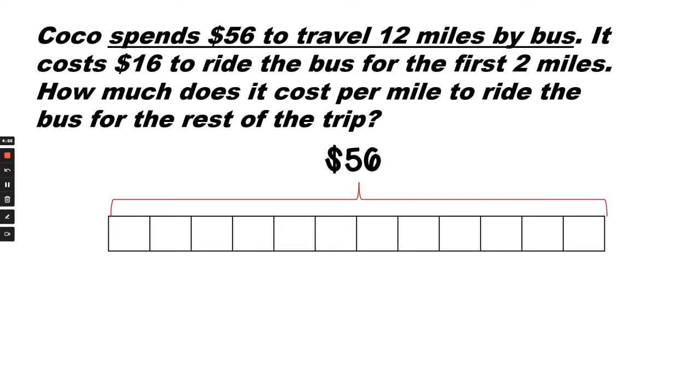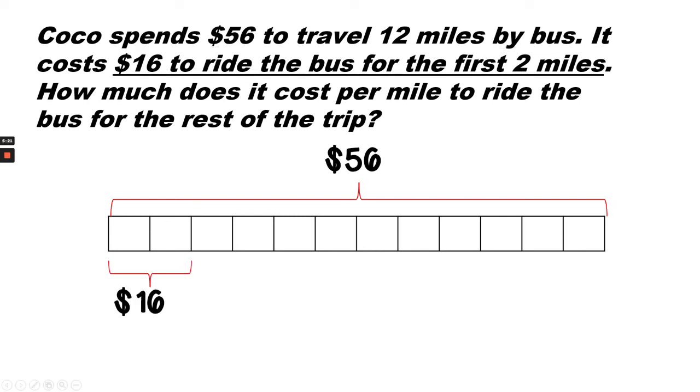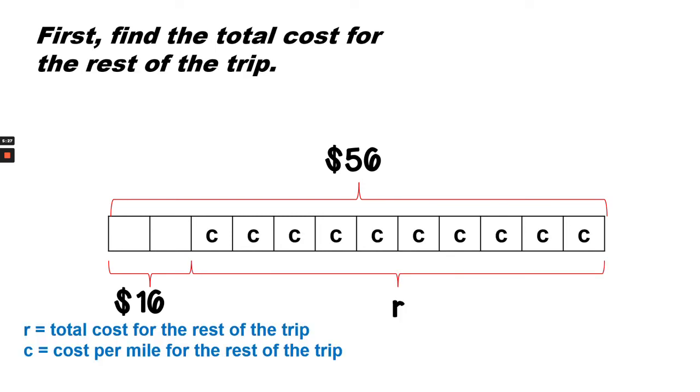So we want to know how much does she spend for one box. But what do we already know? We know that she spends $16 for two miles. How does that help us? So if two miles cost $16, what does one mile cost?